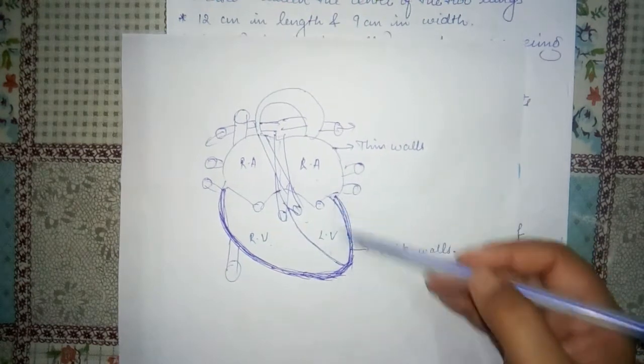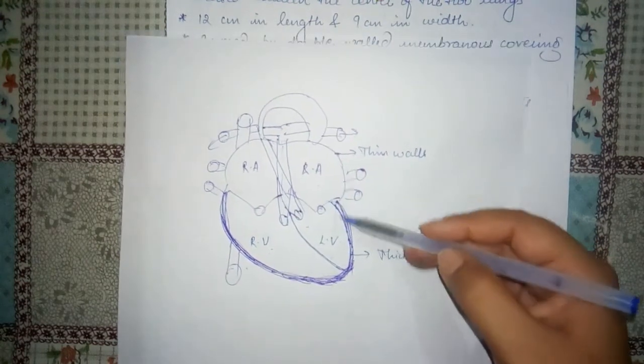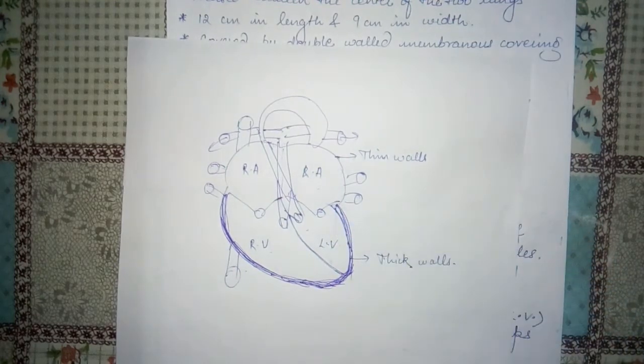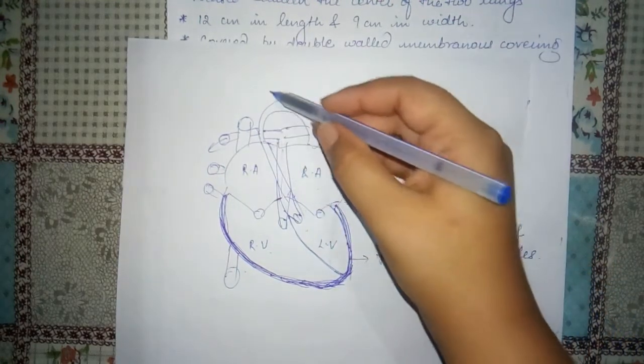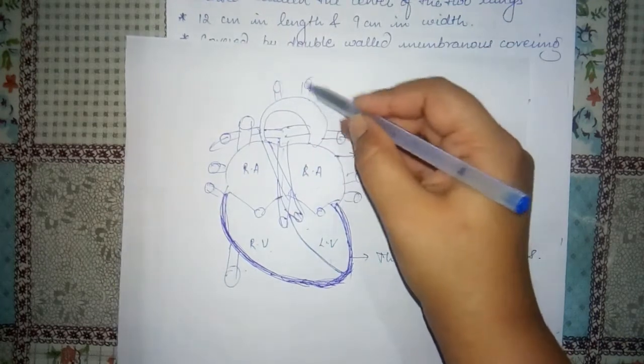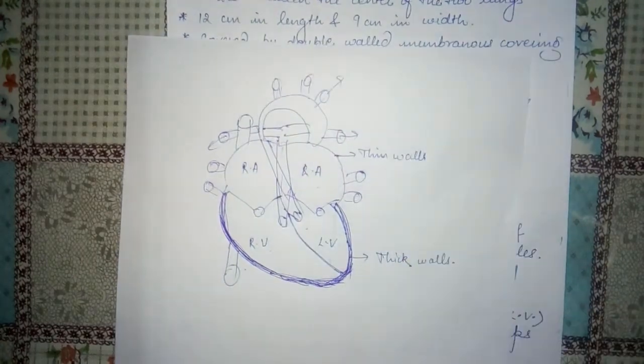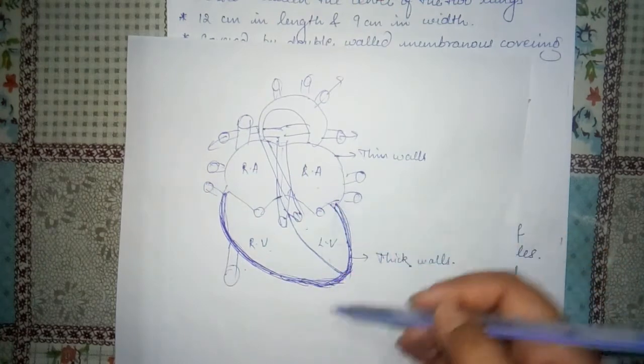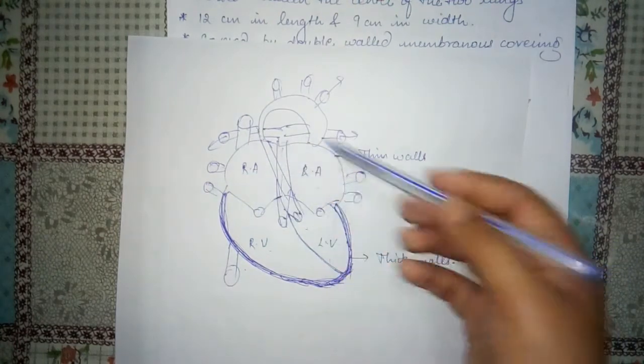Joh left ventricle hai, wo right ventricle se bhi zyadha broad walled hoot hi hain, kyun? Yuki left ventricle hi blood ko excessive pressure or intensity ke saath aorta ke through hamari poori body mein transfer kerti hai. This is the basic reason why walls of ventricles are quite thicker than the walls of oracles.